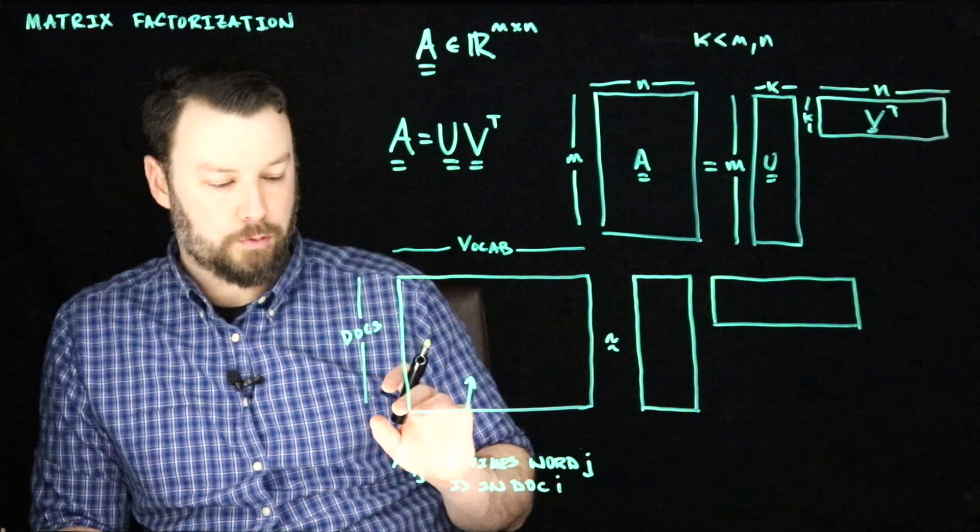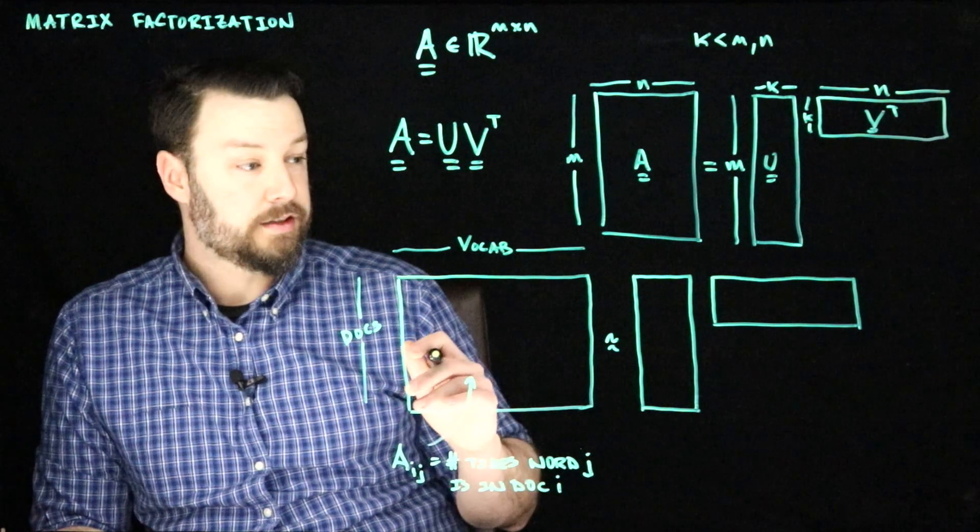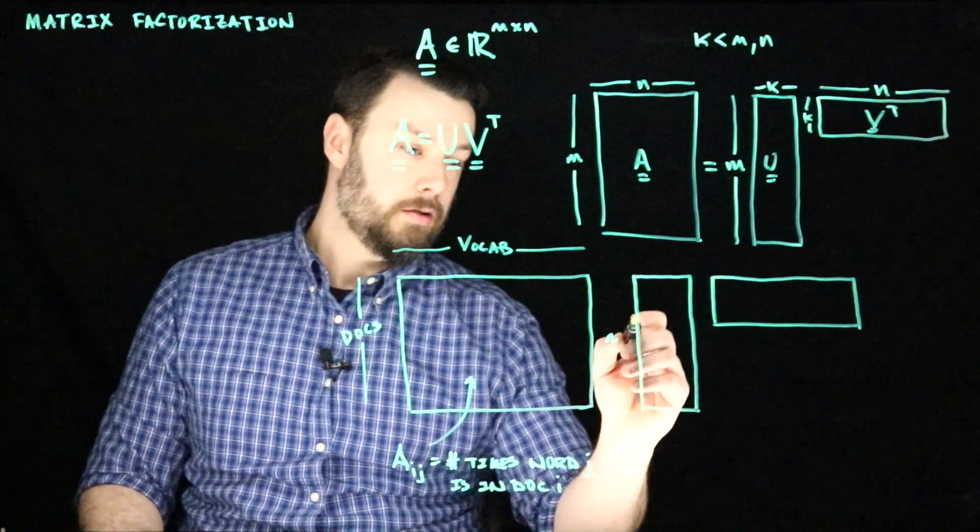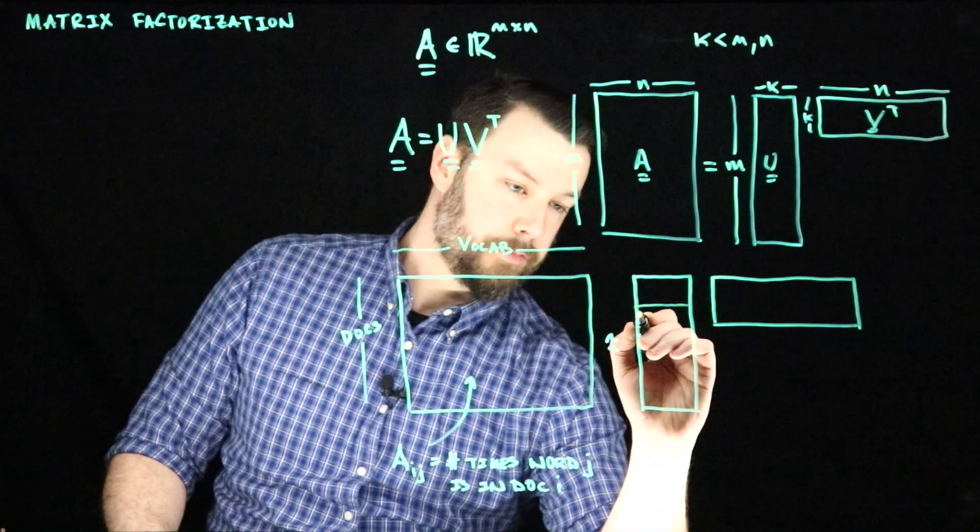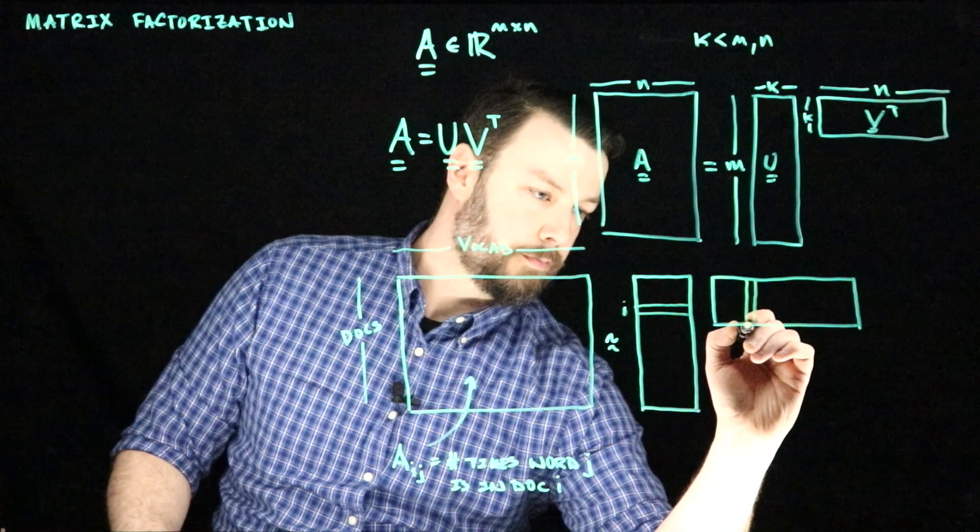What does this give us? So we might ask, how does some entry aij come about? Well, it's the inner product between some row of this matrix and some column of this matrix. So it would be taking the ith row and the jth column of this matrix.